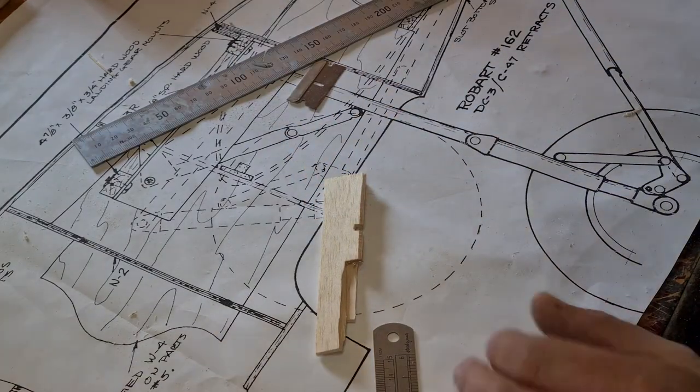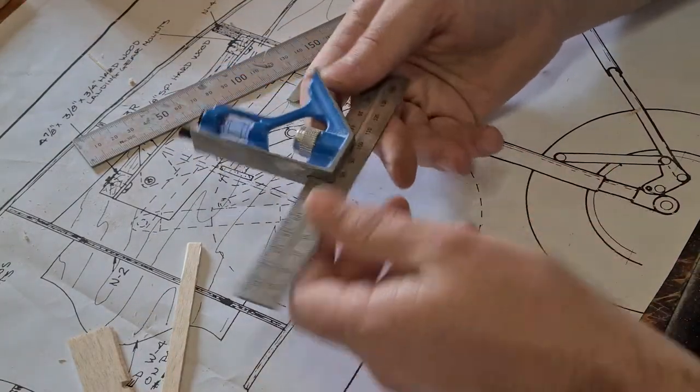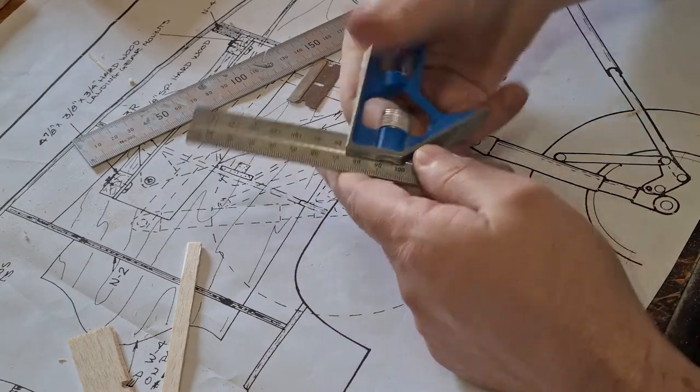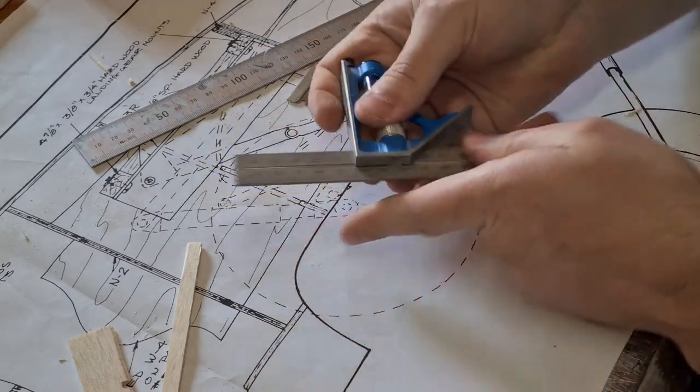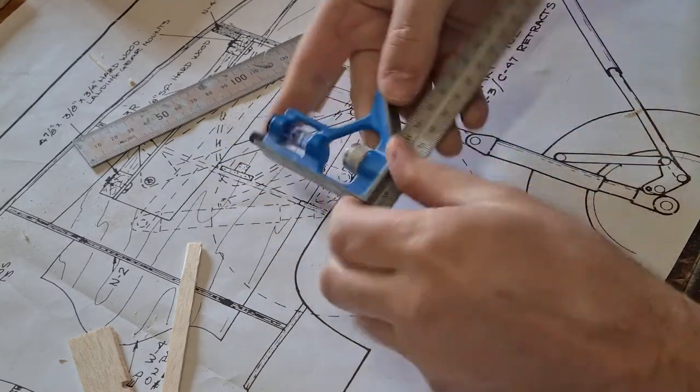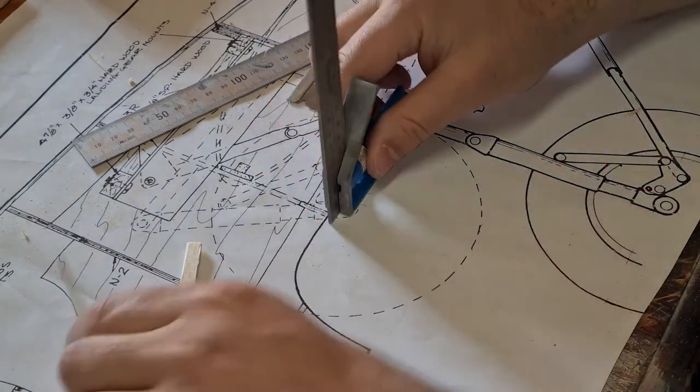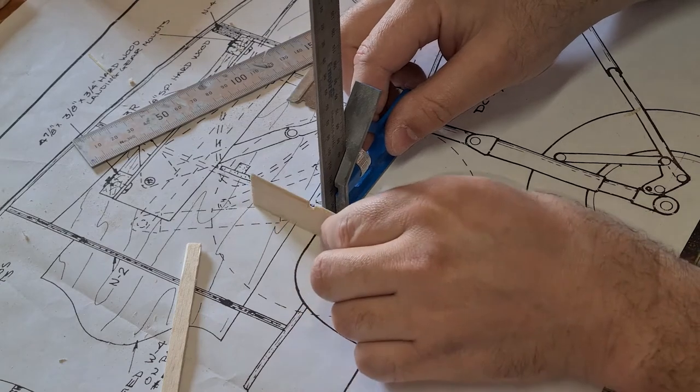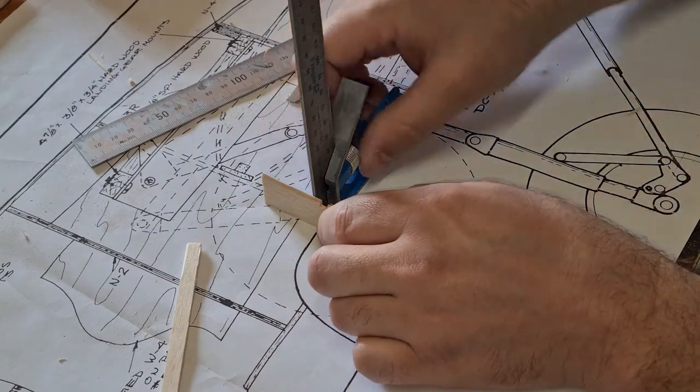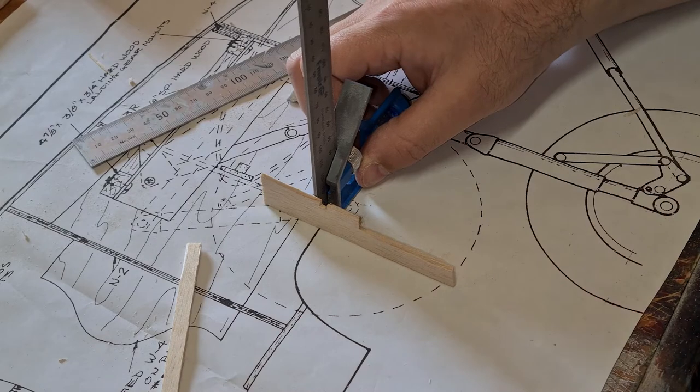Okay, I've also got another tool I like to use, which is the little square. So it's just a little basic square. What makes this good is that when you're laying up ribs and you want the rib to be 90 degrees, this tool allows you to get there pretty nicely.